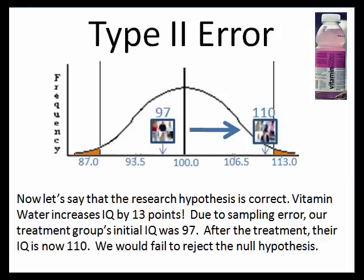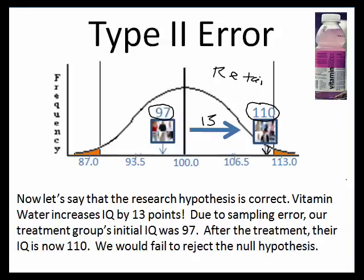But sometimes your treatment will be effective and you won't know it. In this case, our sample starts with an average IQ of 97 — a little below average due to sampling error. They drank vitamin water for two weeks and it actually improved their IQ by 13 points. When we gave them the IQ test, their average IQ was 110. But you can get an average IQ of 110 due to sampling error more often than 0.05 of the time, so we'd have to retain the null. That would be an error — called a Type 2 error.